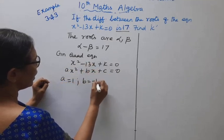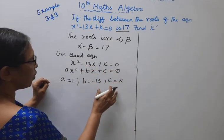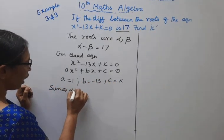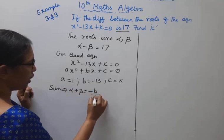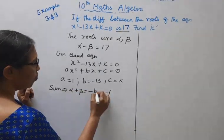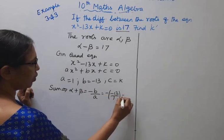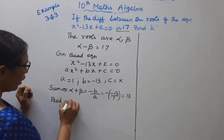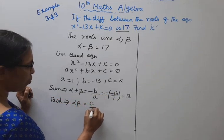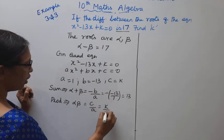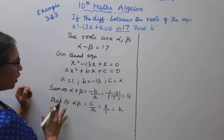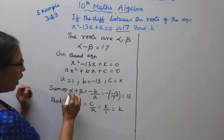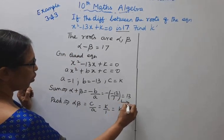Sum of roots: alpha plus beta equals minus b by a, that is minus of minus 13 over 1, which equals 13. Product of roots: alpha beta equals c by a, which is k over 1, that is k. So alpha plus beta equal to 13.